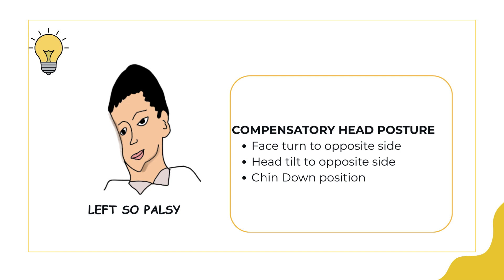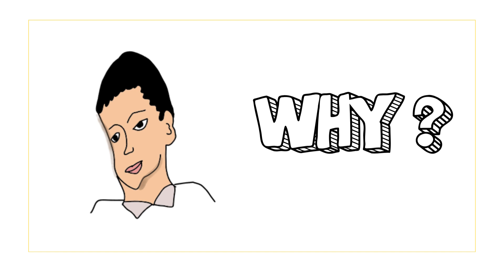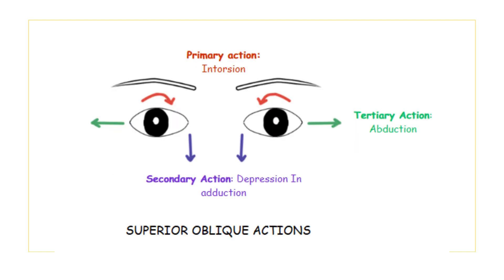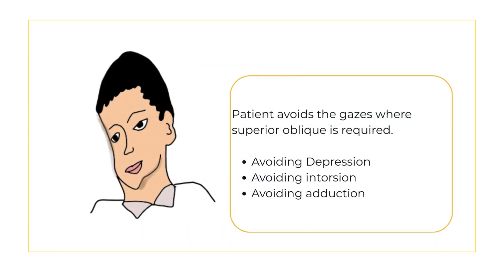Patients with fourth nerve palsy adopt a characteristic compensatory head posture to minimize the discomfort caused by vertical and torsional diplopia. Classically, this posture includes a head tilt towards the opposite — that is, the normal — side, face turn towards the normal side, and a chin down posture. The fundamental problem is weakness of the superior oblique muscle. By adopting this abnormal head posture, the patient is essentially trying to avoid all positions in which the superior oblique is maximally required.